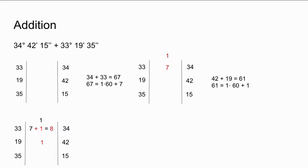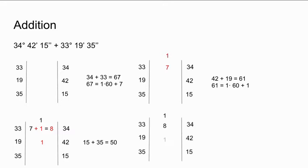Now let's look at the last two numbers. Here we are adding 15 to 35, which is equal to 50. Because 50 is less than 60, we only need one digit to represent it. Thus, we write 50 in between the 15 and the 35. We have now obtained our answer, which is 1 first elevates, 8 degrees, 1 minute, and 50 seconds.